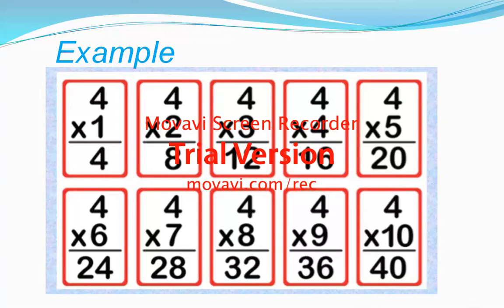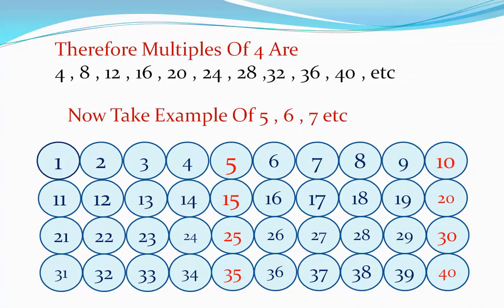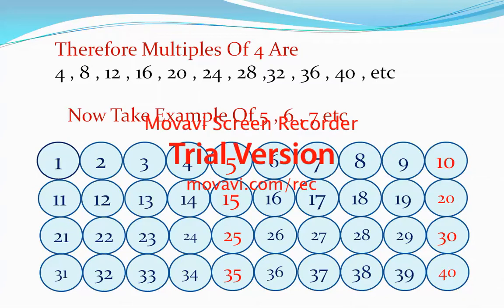So we can write multiples of four: four, eight, twelve, sixteen, twenty, twenty-four, twenty-eight, thirty-two, thirty-six, forty, etc. These are different numbers resulting from multiplying four.